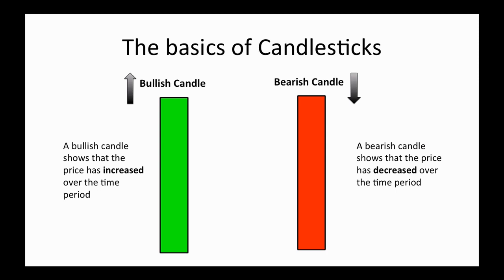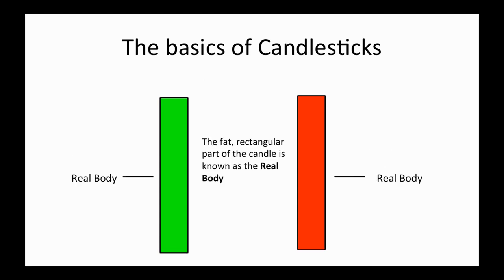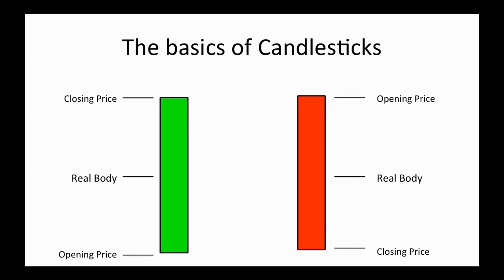Within the candles themselves, we can garner more information. The fat, rectangular part of any candle is known as the real body. What the real body shows us is the specific price action relating to the opening and the closing price. For the bullish candle, the bottom of the candle body shows the opening price and the top shows the closing price. Bearish candles are reversed — the top of the body is the opening price and the bottom is the closing price, since the bearish candle is displaying a price decrease.